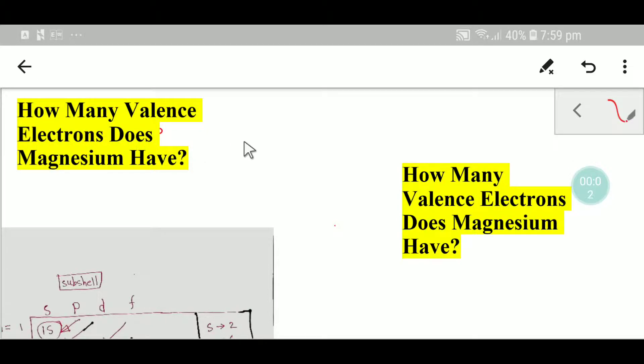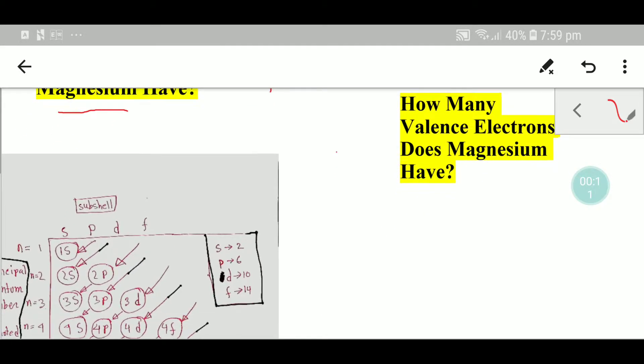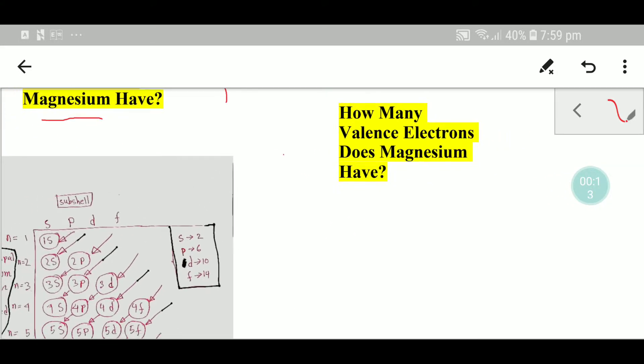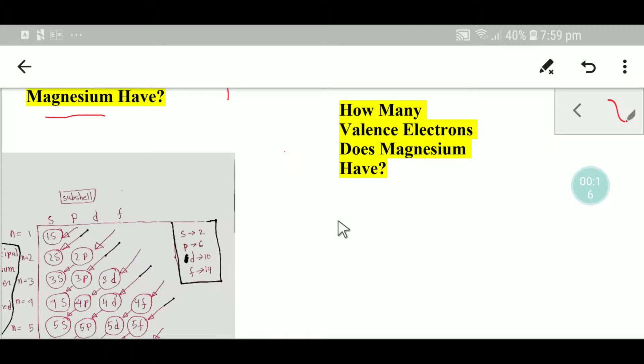Hello everyone, today we are going to learn how to find out the valence electrons of magnesium. If we look at the periodic table, we'll see that the symbol for magnesium is Mg and its atomic number is 12.